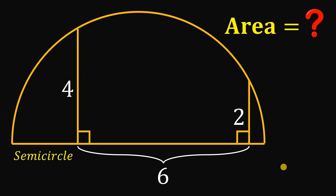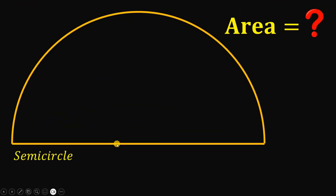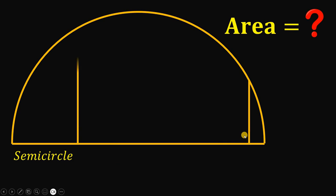Can you solve this geometry challenge? Here's the question. Given this semicircle, let's draw some segments like this, which is perpendicular to the diameter of this semicircle.